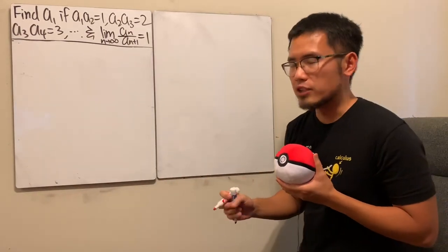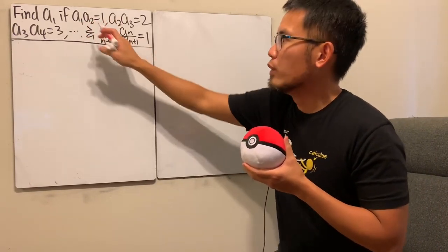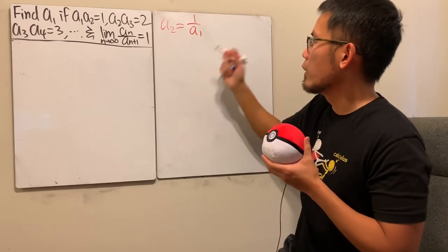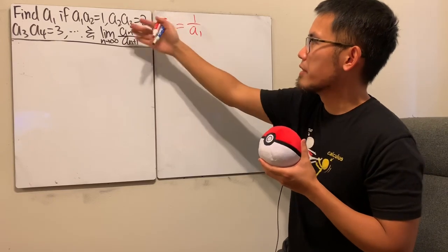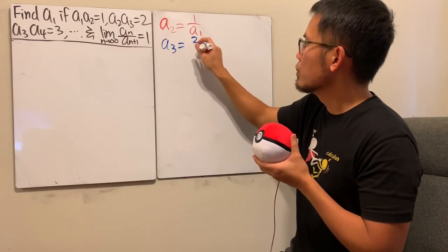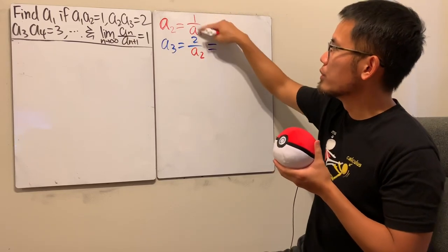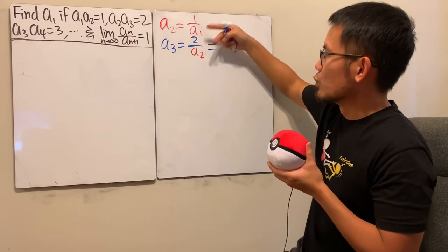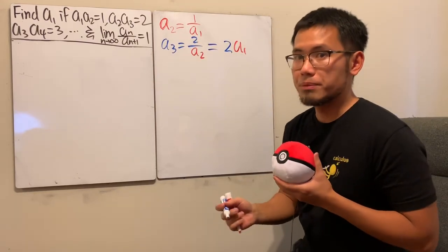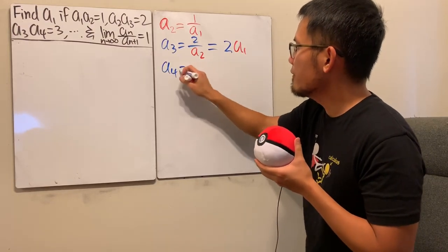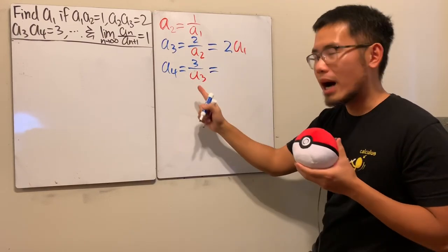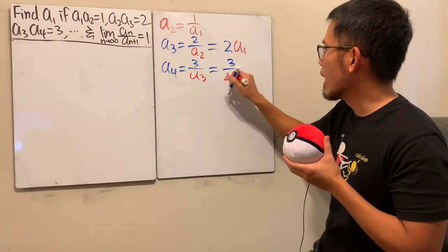I think it's a good idea to make some observations, so let's look at this first. From a1·a2 = 1, we know a1 is not equal to 0, so dividing both sides by a1 gives us a2 = 1/a1. Then a3 = 2/a2, and substituting, that gives us 2a1. And a4 = 3/a3, which is 3/(2a1).